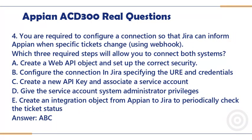Question 4. You are required to configure a connection so that Jira can inform Appian when specific tickets change, using a webhook. Which three required steps will allow you to connect both systems?